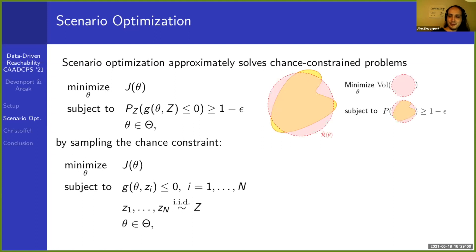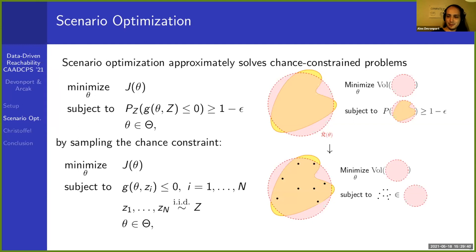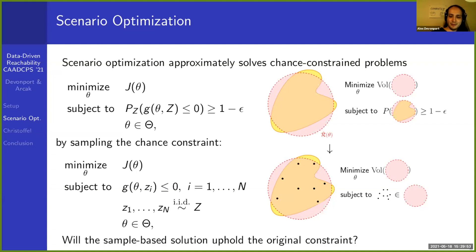Applying this transformation to our reachability problem: we sample from the reachable set random variable and instead of ensuring a certain probability mass is contained, we look for the minimum-volume estimate containing all sample points. This is generally a much easier problem to solve and under certain convex assumptions can be handled by off-the-shelf solvers. The key question is whether the sample-based solution still upholds the original probabilistic constraint, and under certain conditions we can show it does with high probability — this is the basis of our probabilistic guarantee of correctness.